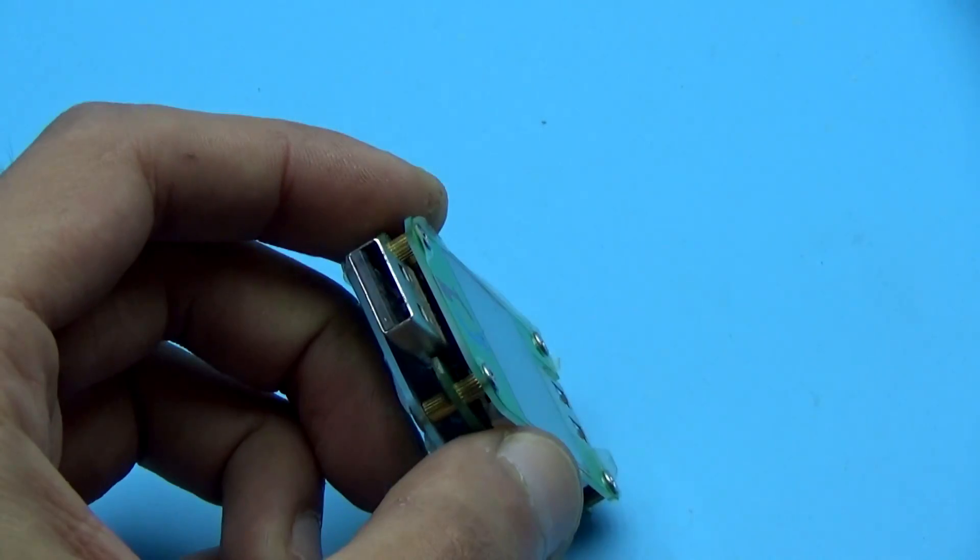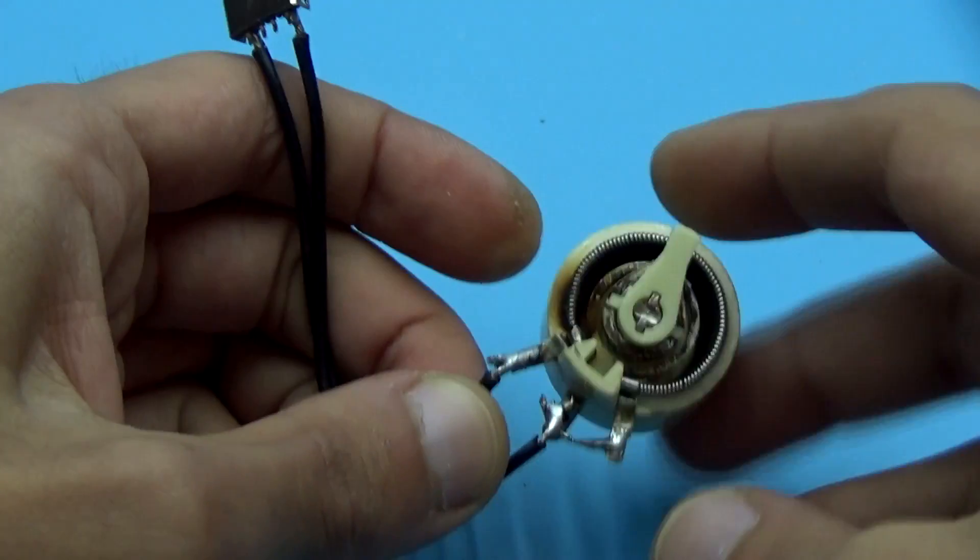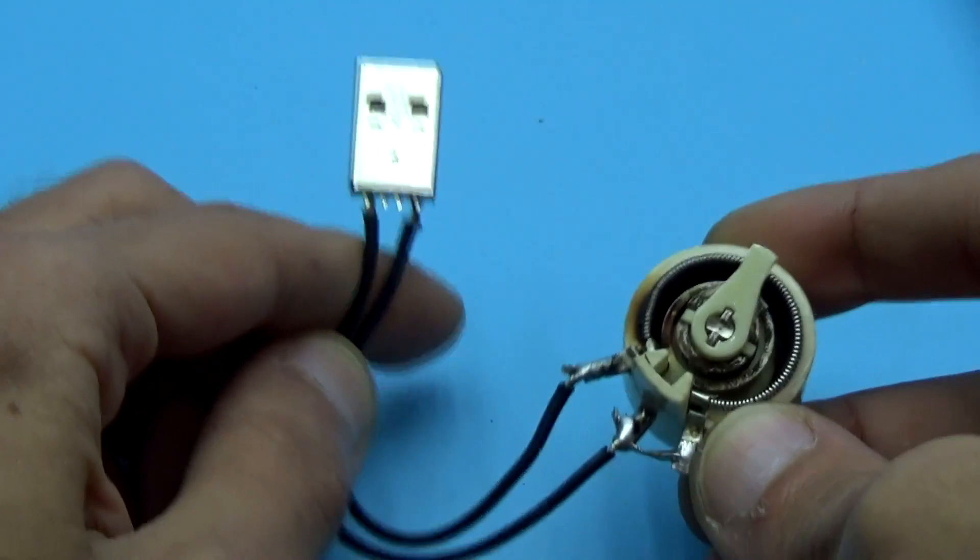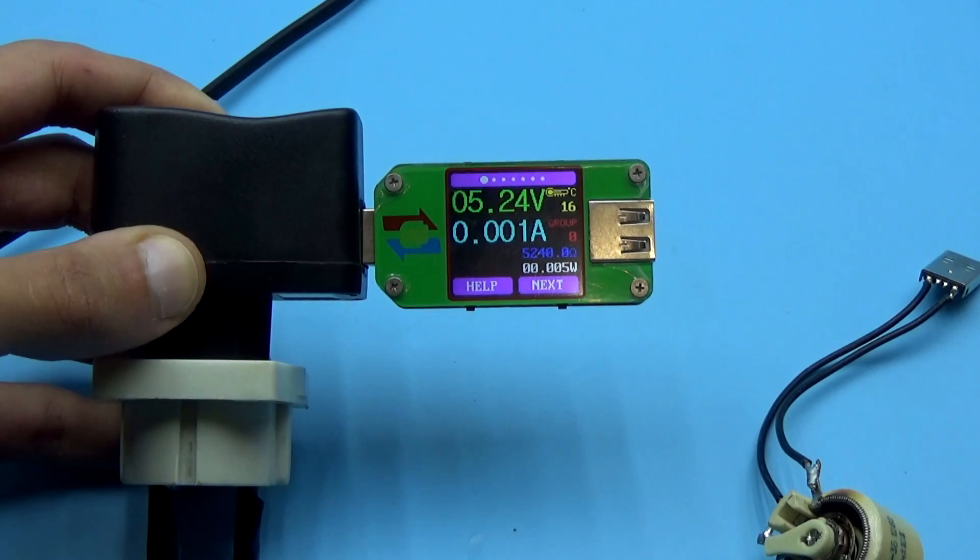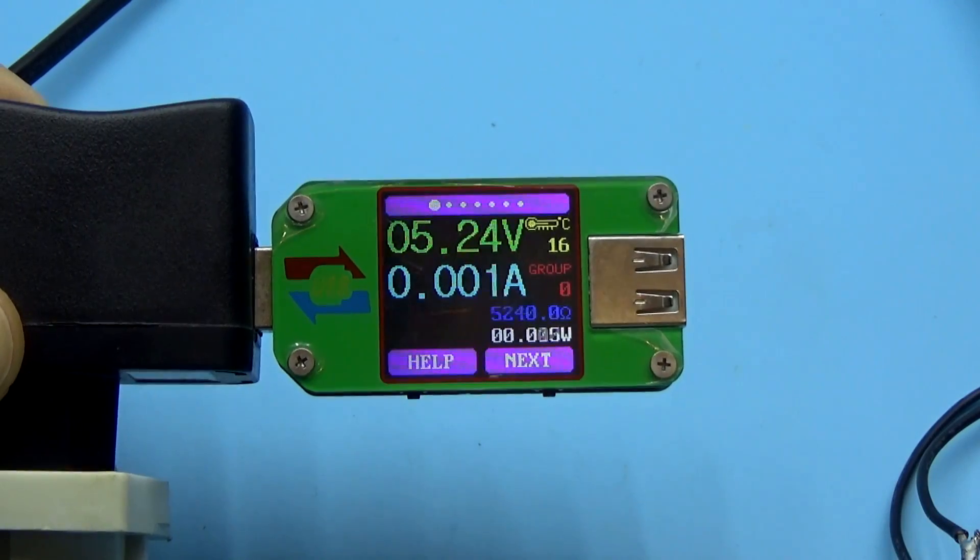As a meter, I will use a high-precision USB tester and as the load will be a wire variable resistor. I connect the tester to the charger and we can see that the voltage is really within 5V. Well, let's load it.